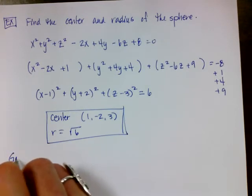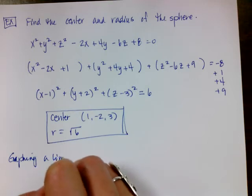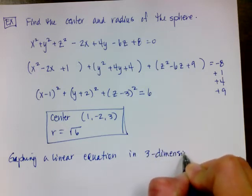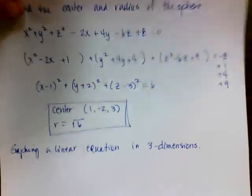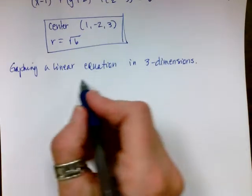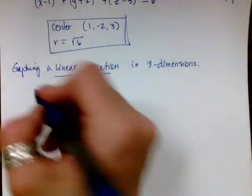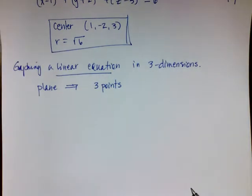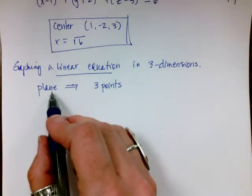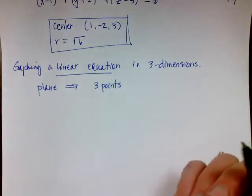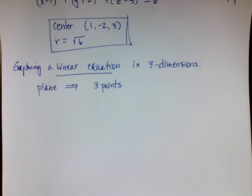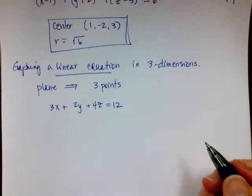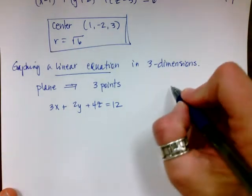My last new concept is graphing a linear equation in three dimensions. If you remember from the beginning, we talked about showing a trace when you graph a point. If I'm going to graph a linear equation in three dimensions, the result is going to be a plane, because three points define a plane — that's why cameras have a tripod, since a plane is much more sturdy than a single point.